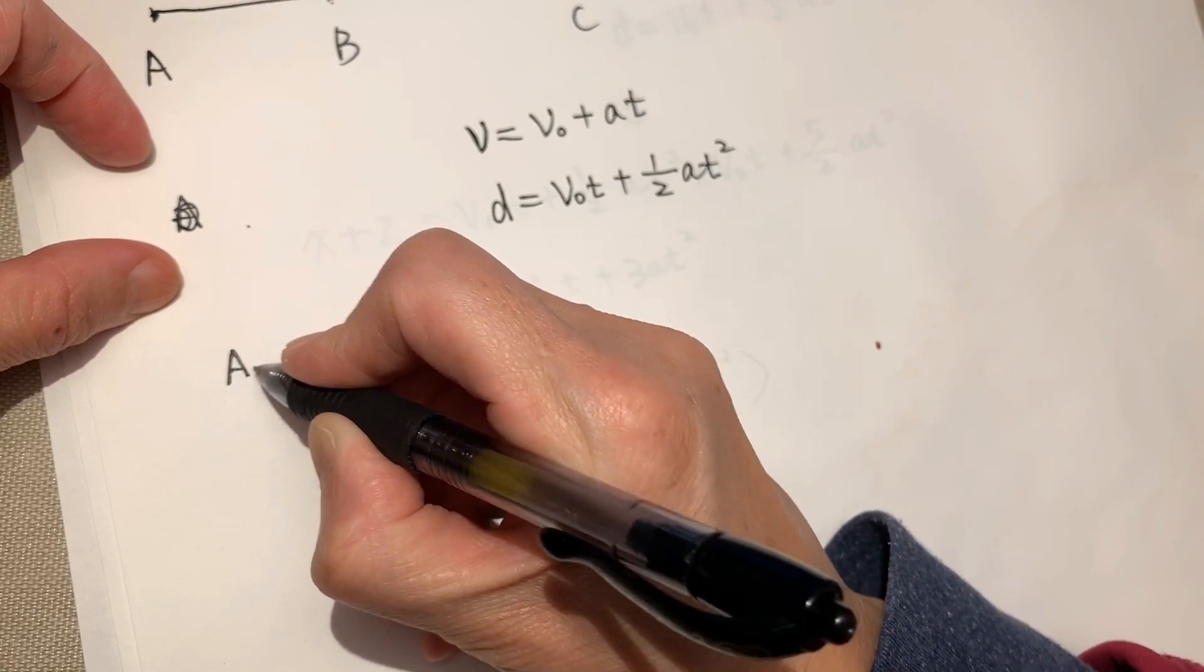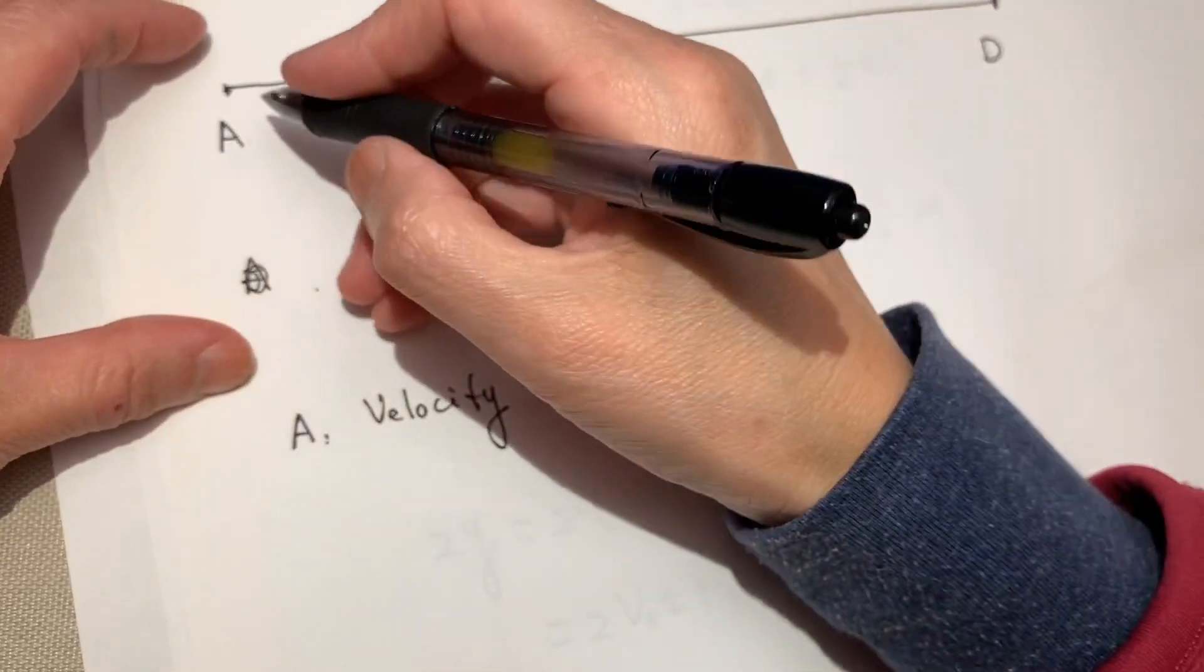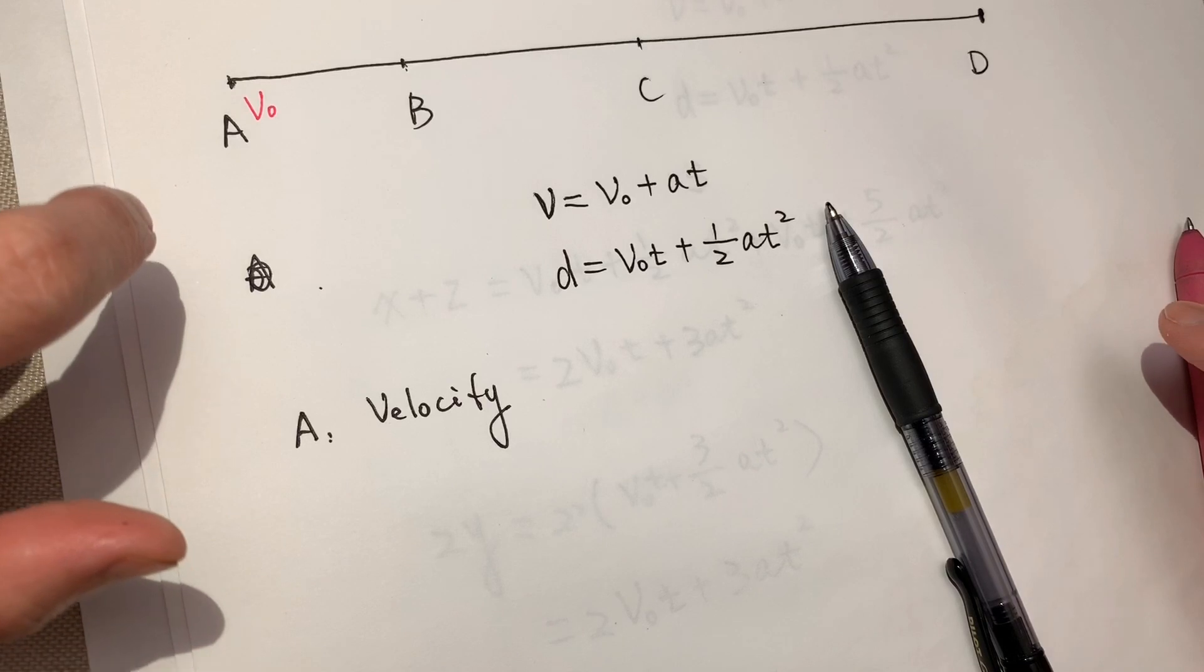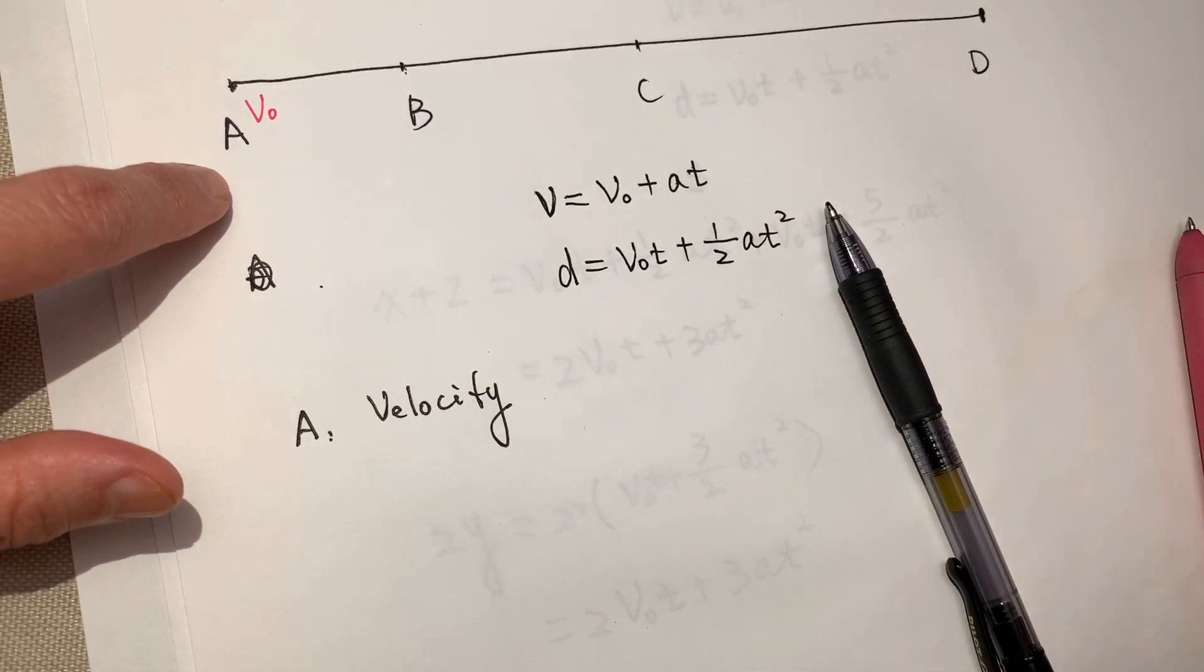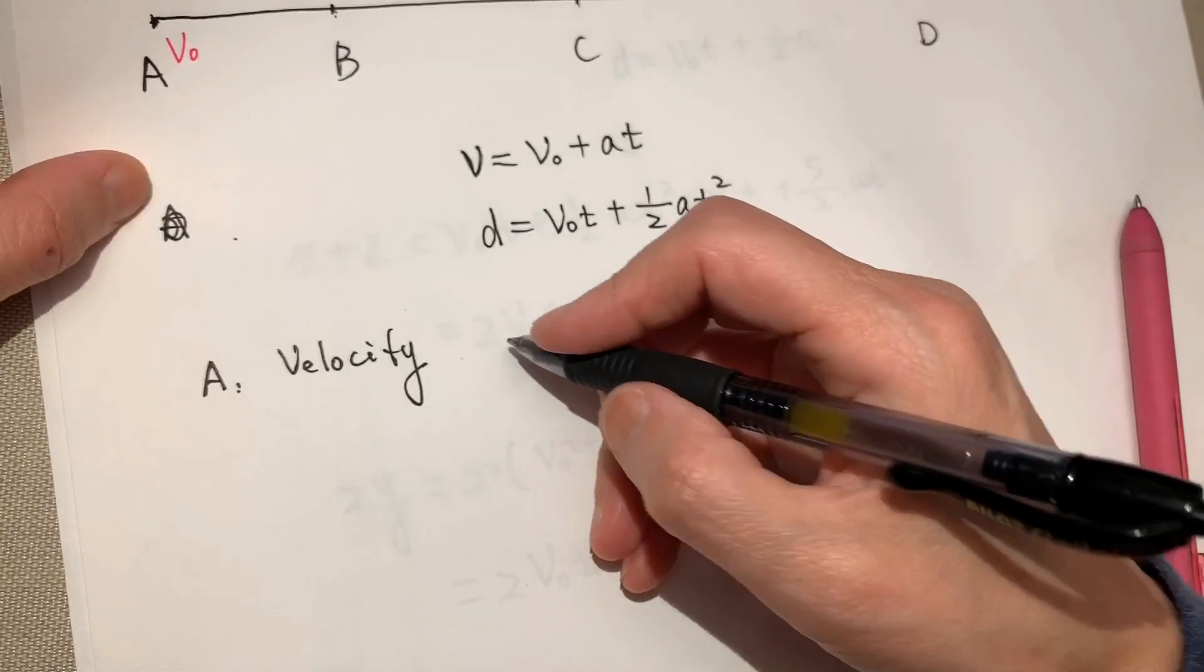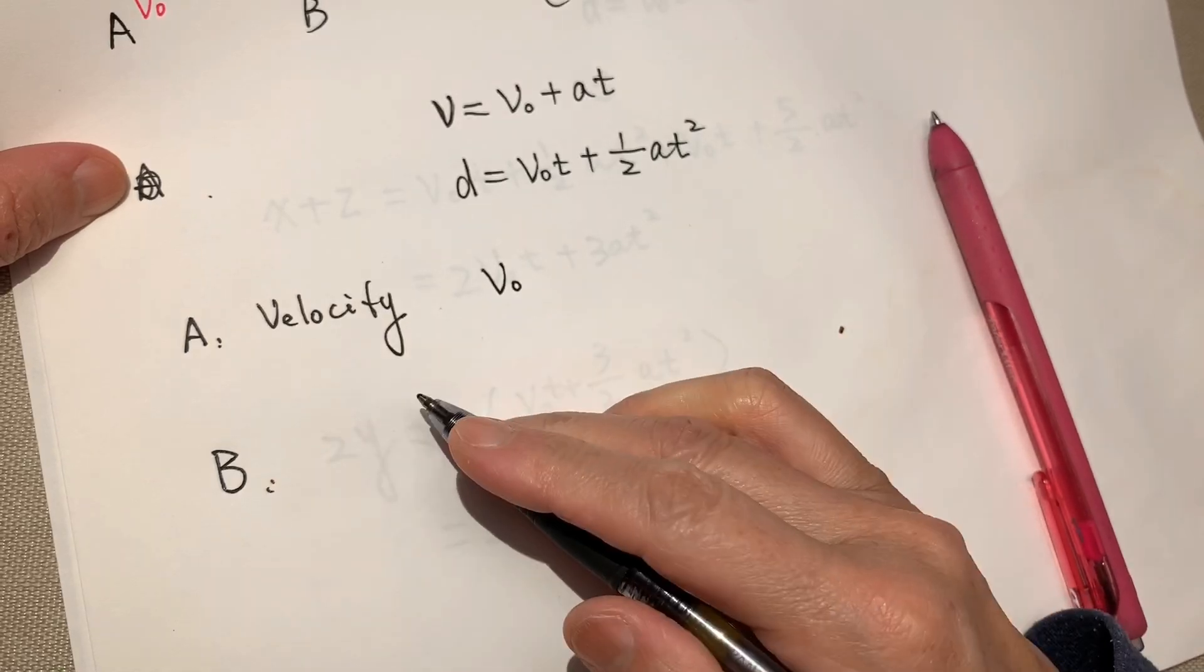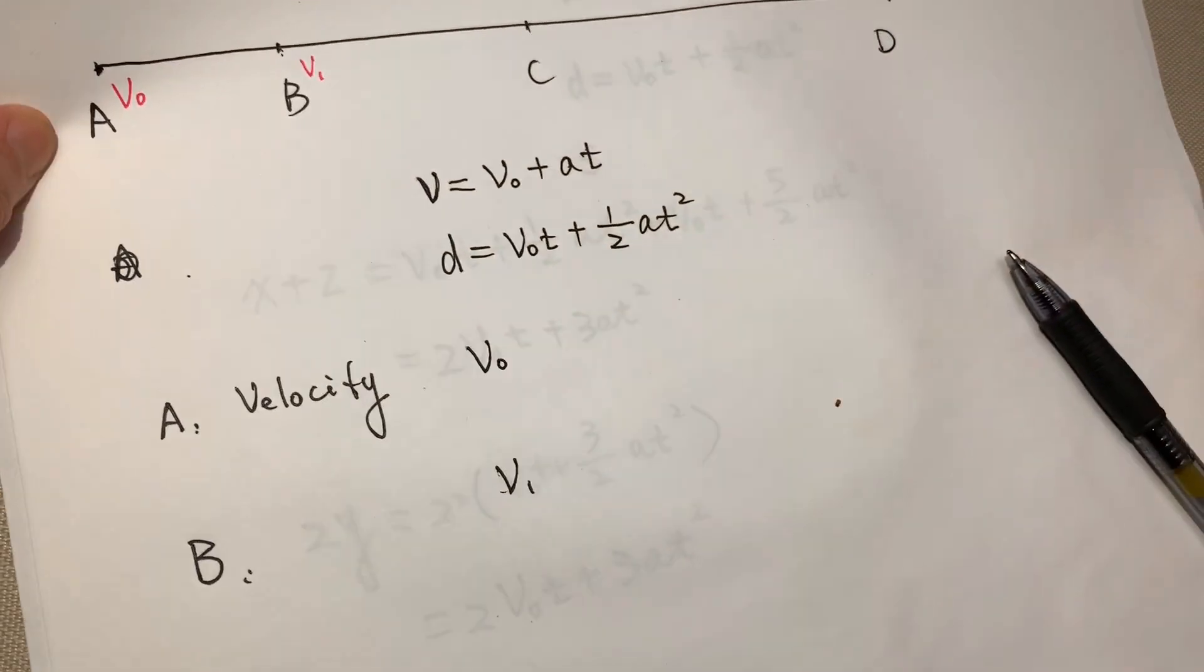Okay, so at point A, the velocity, we suppose it's initial speed. There is no force, no any big bump added to this matter. It's just naturally staying there, no one push, no bully, no roughhouse, nothing happened. It is just doing its own thing. So the velocity is V0. Okay, at point B, the velocity is V1.